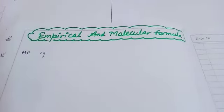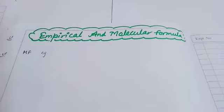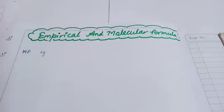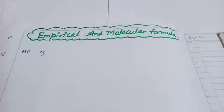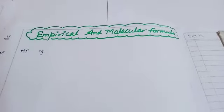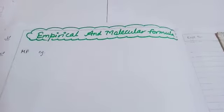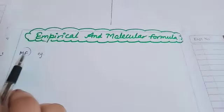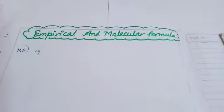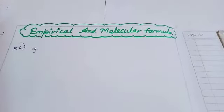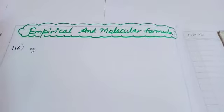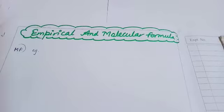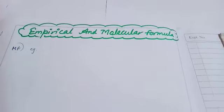Good morning 11th class. The topic we are starting today is empirical and molecular formula — this is a very important topic from your exam point of view. First of all, what is molecular formula? Molecular formula, which you can also represent as MF (capital M, capital F), is a formula which gives the actual number of atoms of various elements present in one molecule of the compound.